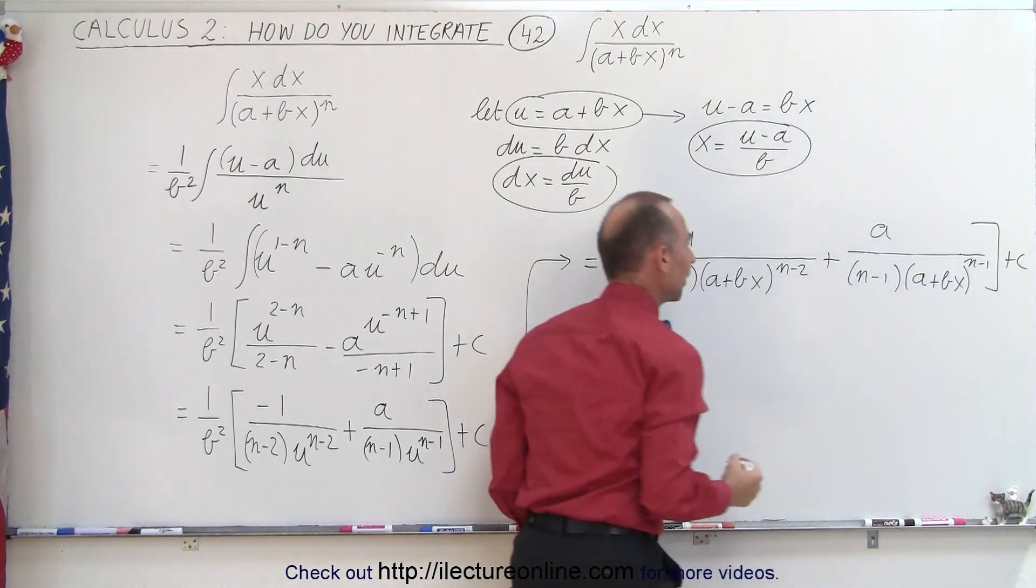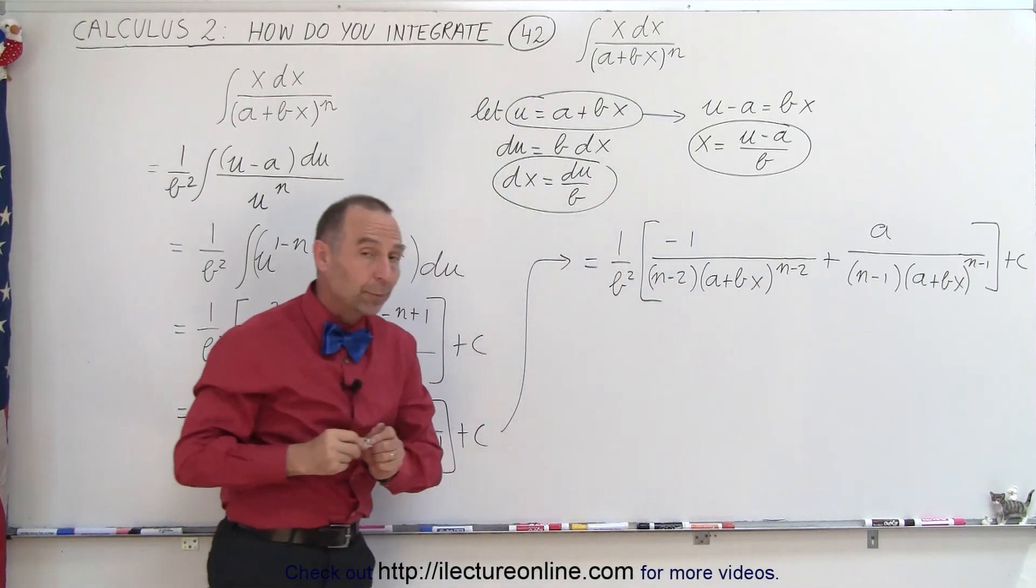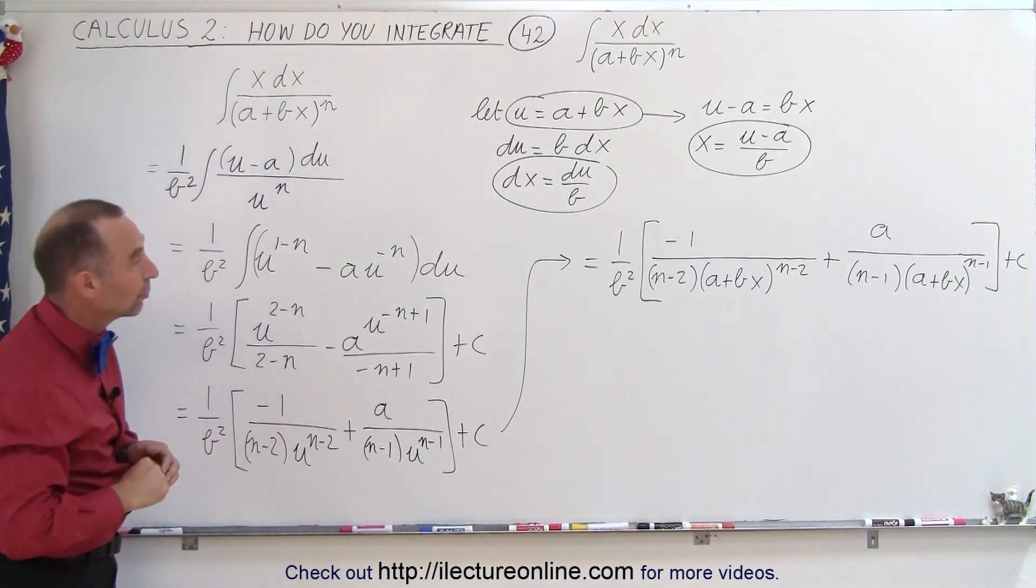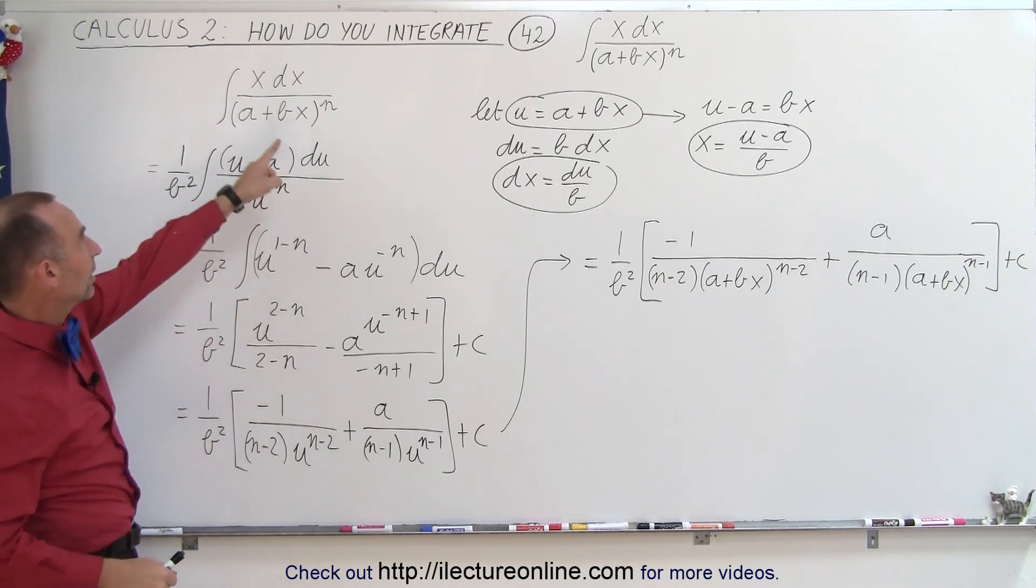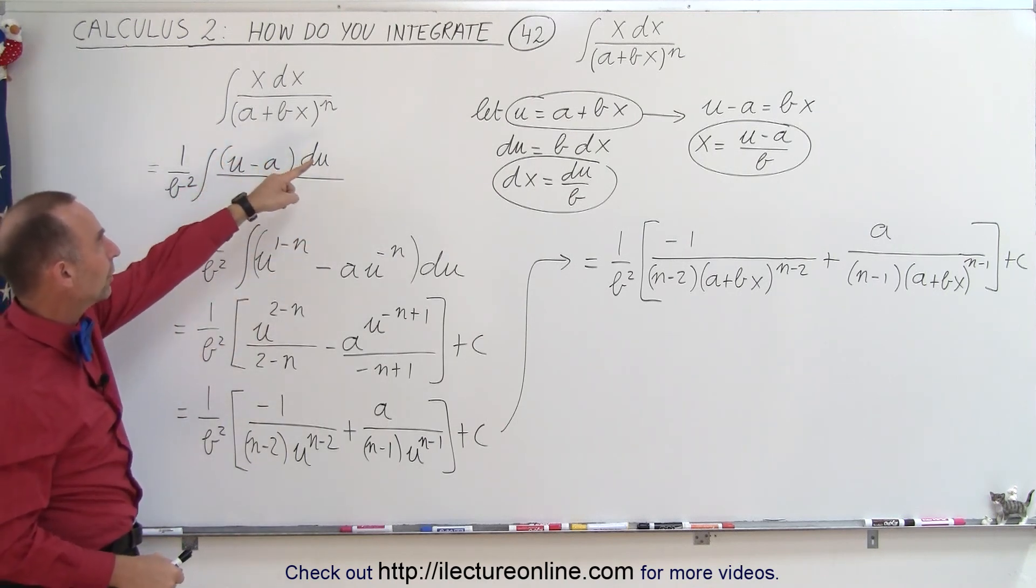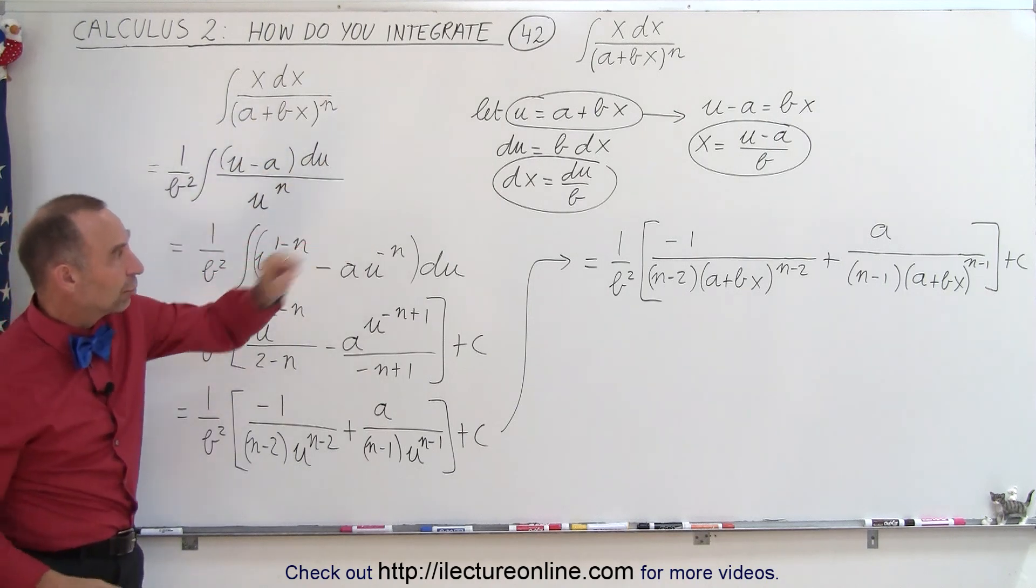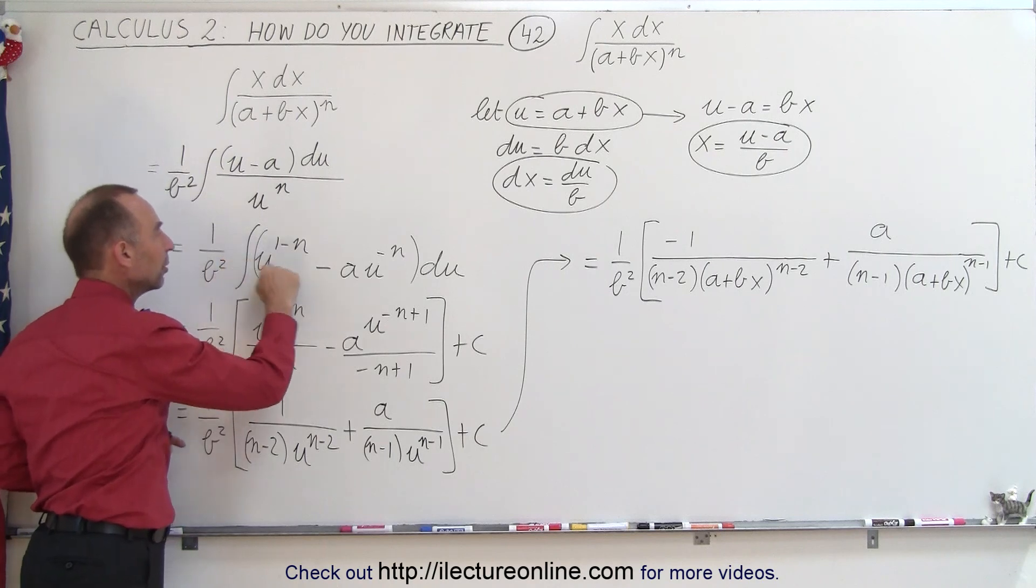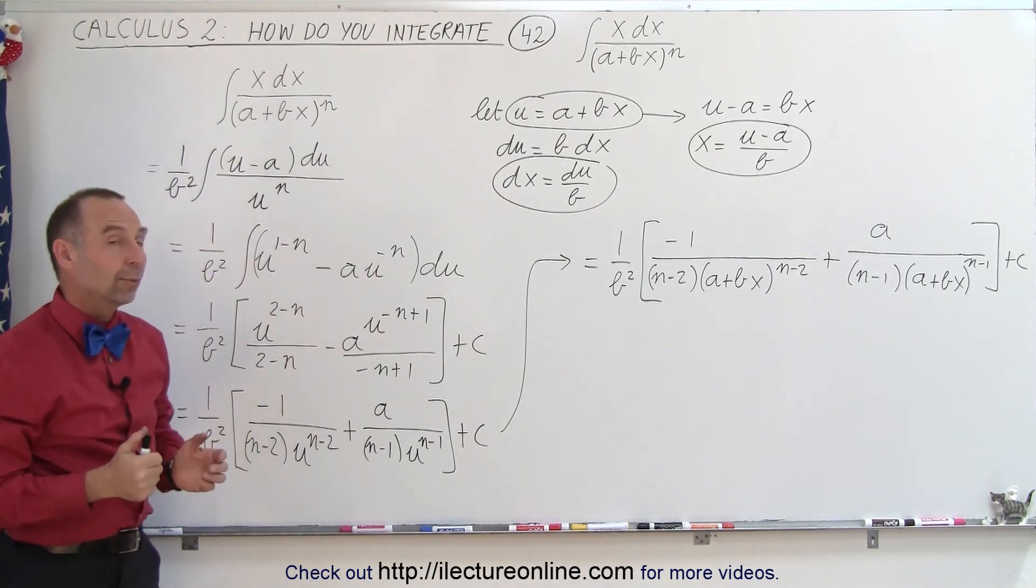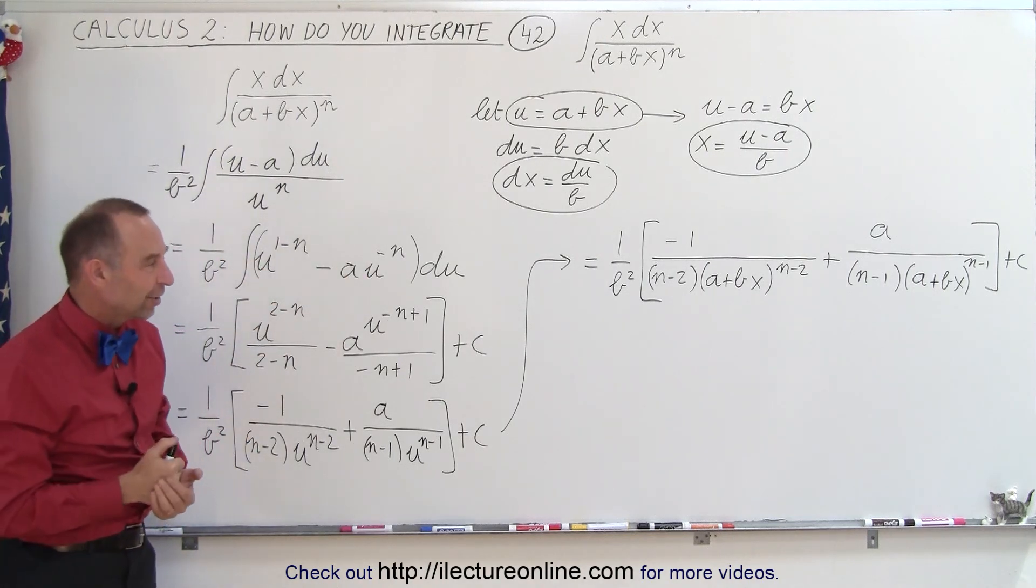And we still have our constant of integration, and that's probably the best way to write the answer. So you can see that again using the same technique, first replacing what's in parentheses by u and then solving for x in terms of u, substituting and then dividing the denominator into the numerator to end up with integrals that we can readily integrate, and that's how it's done.